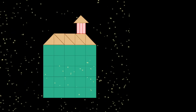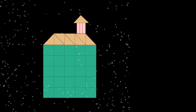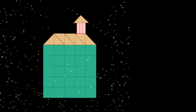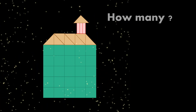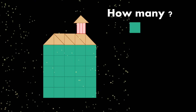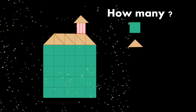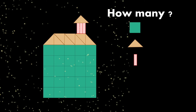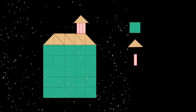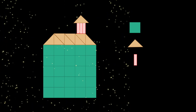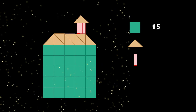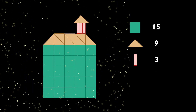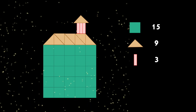This is a picture of a house. From this picture, can you tell me how many green squares, how many brown triangles, and how many pink rectangles this house is made of? By doing simple counting, we find out that there are 15 green squares, 9 brown triangles, and 3 pink rectangles making up the house.